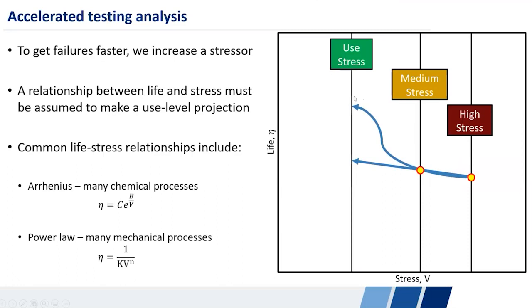And so what we need to do there is typically test multiple stress levels that are elevated beyond the use condition. So you can see on the plot on the right, we've got a medium stress level and a high stress level. And then we need to assume something about the form of the acceleration. Is it going to be a straight line back to the use condition? Is it going to be this squiggly line back to the use condition? And that form of that relationship is called the life stress relationship, or LSR.